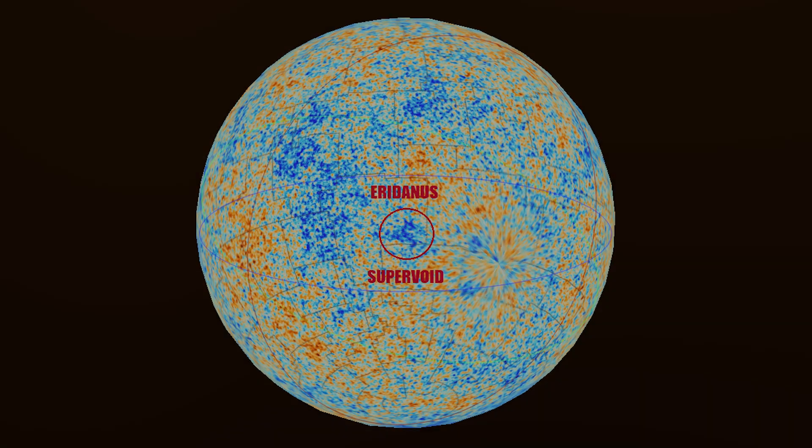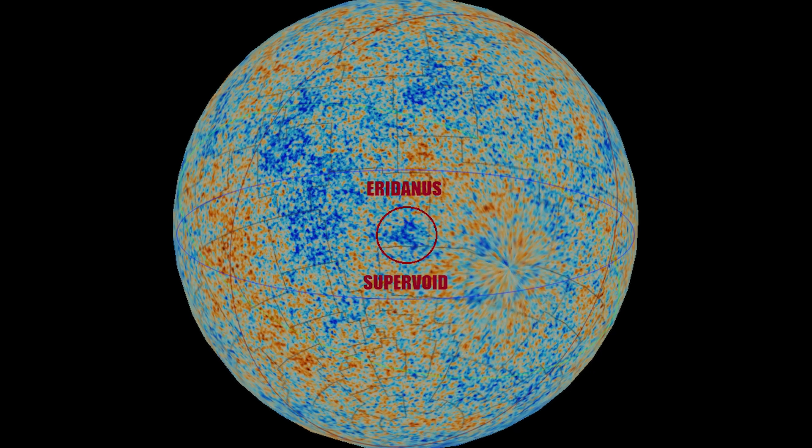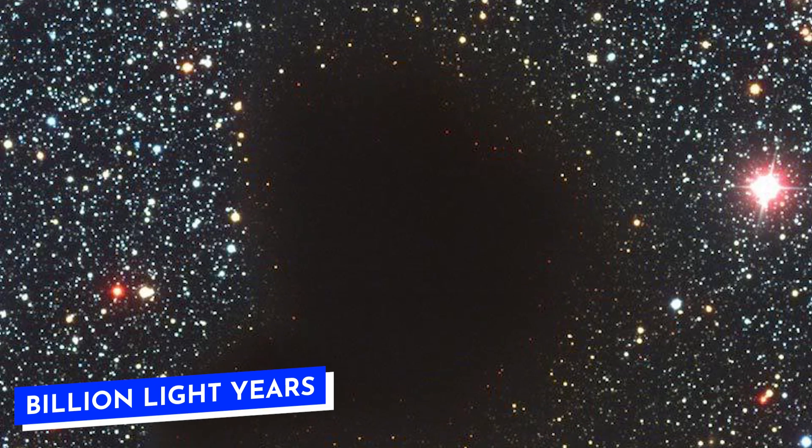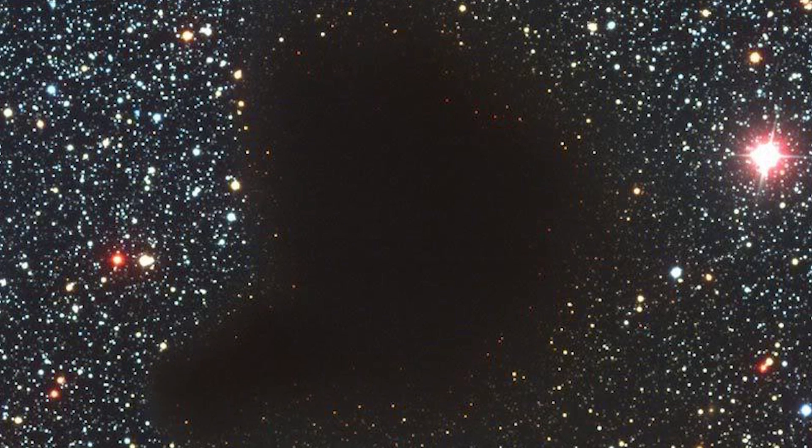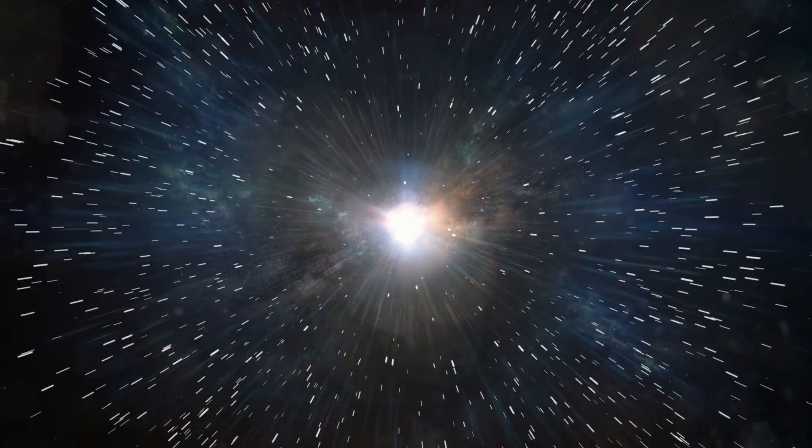The Eridanus Supervoid. This is a gigantic empty spot in the universe, stretching a billion light years with barely any galaxies. It's one of the largest voids observed in the universe. This cold spot could be due to the lack of galaxies affecting the light from the Big Bang.